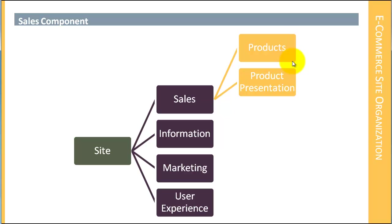It includes the product presentation. We've got a featured product as we saw on the front page, which has some information about it. We have summary product information so a customer can evaluate whether or not they're interested in a specific product, and then we have detailed product information. So we have these presentation methods that we have to develop.